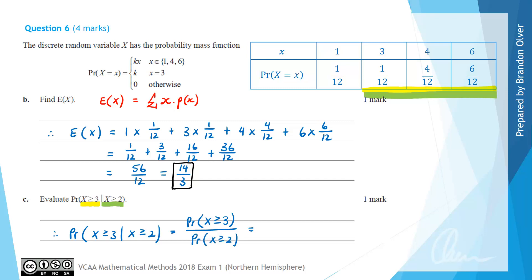We know those two things are equal. In fact, they're both 11 over 12 if you add up those probabilities. So 11 divided by 12, divided by that same fraction, simply gives a value of 1. So the probability for that conditional event is 1.